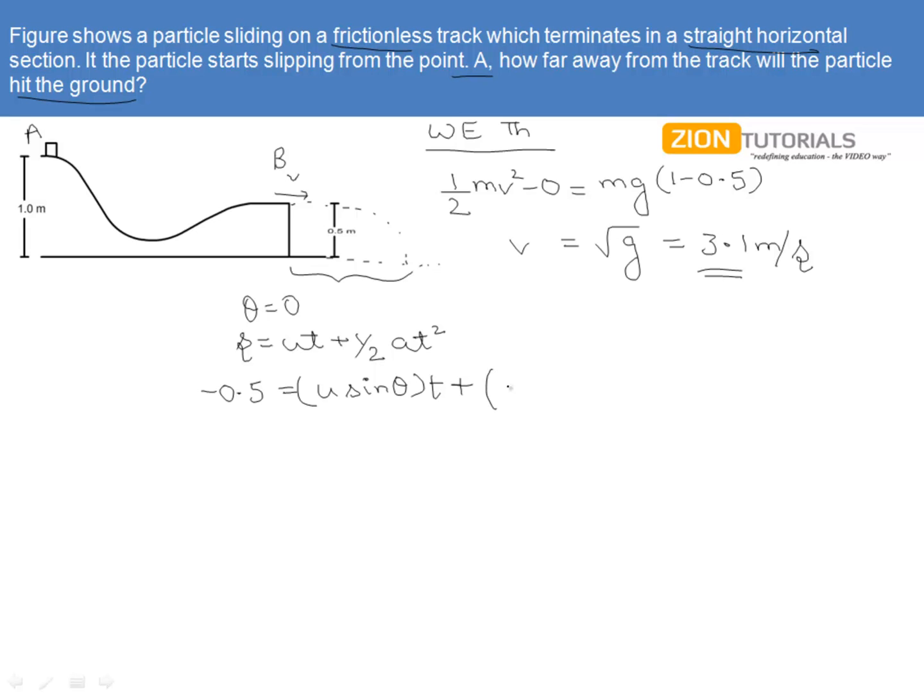This is ½ into -GT². Now theta is 0, so this becomes 0. Now here we can calculate the time to be 0.31 seconds from this quadratic.